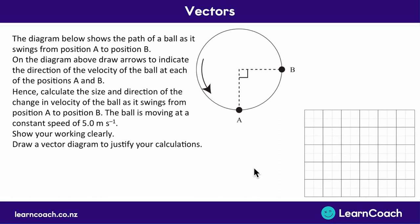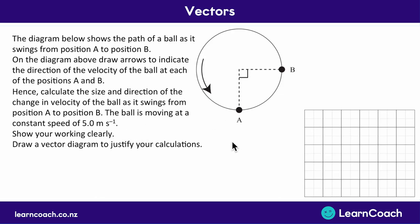Here's an old NCEA question. This diagram shows the path of a ball as it swings from position A around to position B. On the diagram, we need to draw arrows indicating the direction of velocity at each position, A and B. We then need to calculate the size and direction of the change in velocity as the ball swings from A to B. The ball is moving at a constant speed of 5 meters per second. Show all working and draw a vector diagram to justify your calculations.